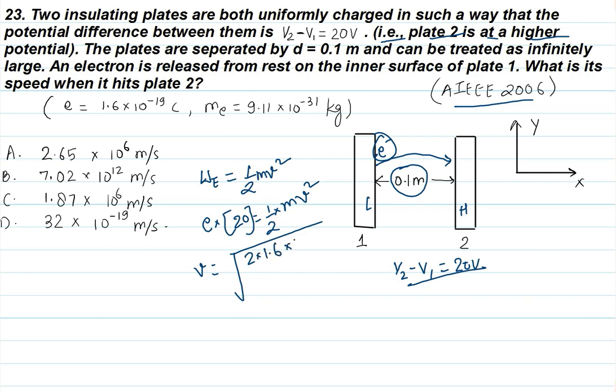e means 1.6 × 10^-19 times 20 divided by m, and m is 9.31 × 10^-31. When you solve this, you get 2.65 × 10^6 meters per second.